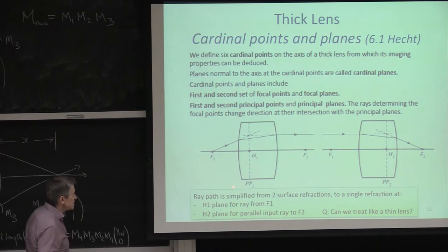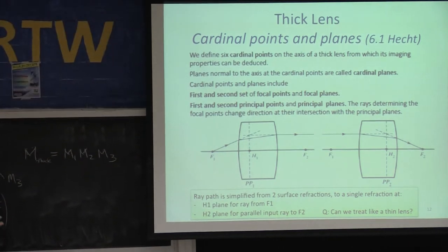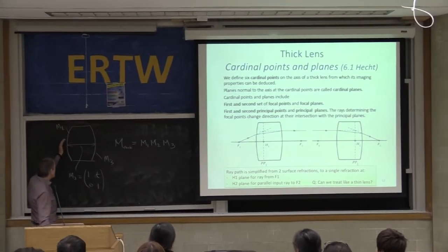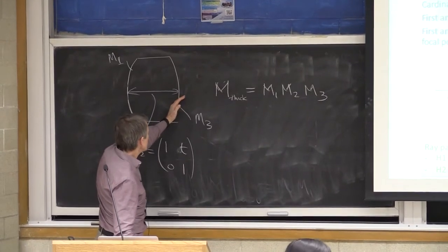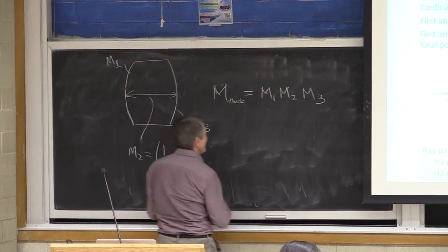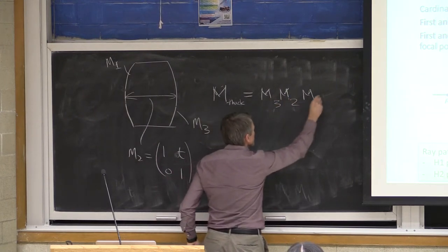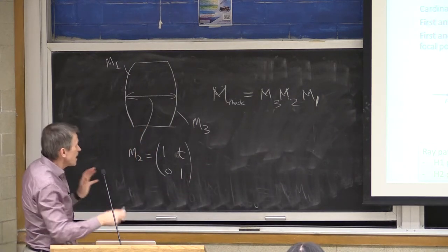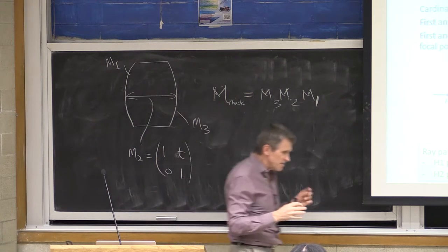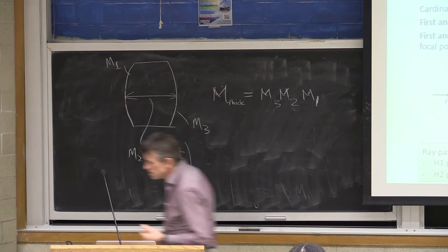We've developed this matrix method where we have a thickness, a Gaussian optic refracting surface M1, M3 — written in backwards order — and we expand that. Using this method, we can find useful reference points in a thick lens.